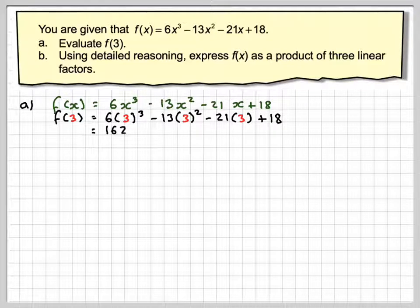That's going to give me 162 minus 117 minus 63 plus 18, which gives me 0.